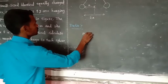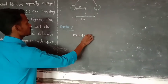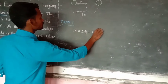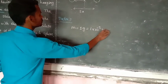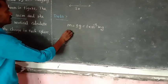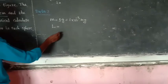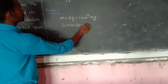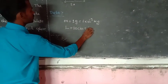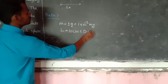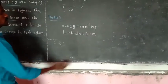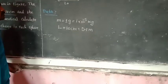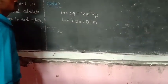Mass is 1 gram, which equals 1 into 10 power minus 3 kg. Length L is 10 centimeters, which equals 0.1 meters, or 10 into 10 power minus 2 meters.